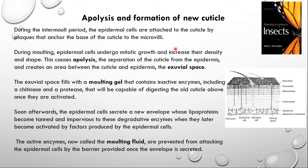During the intermolt period, when the insect is not going through molting, the cuticular layer is attached to the epidermal cell layer by plexes that anchor the base of the cuticle to the microvilli. During molting, apolysis begins as the epidermal cells undergo mitotic growth, increasing in density and changing in shape and numbers. This causes the cuticle to become loose from the epidermal layer. The separation of the cuticle from the epidermis creates an area between them known as the exuvial space.